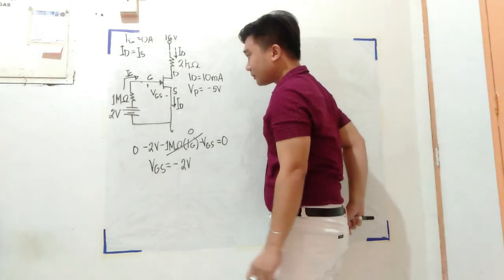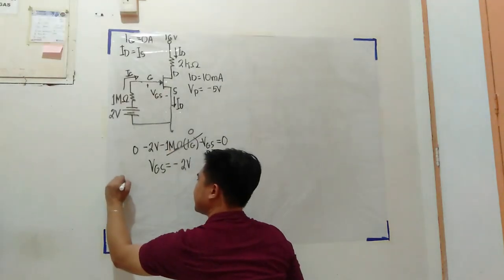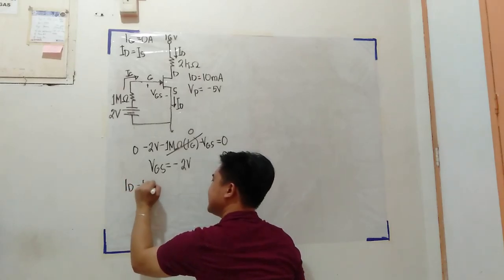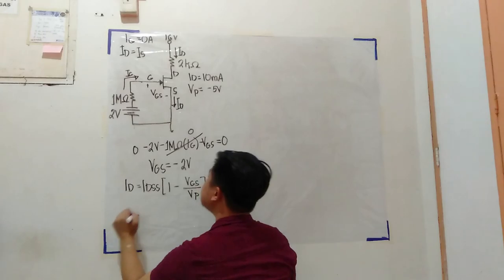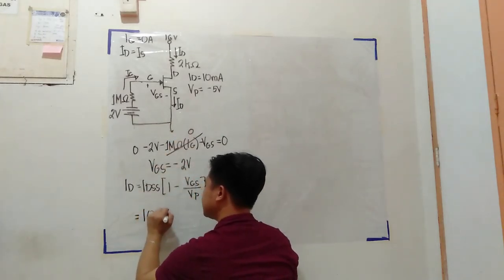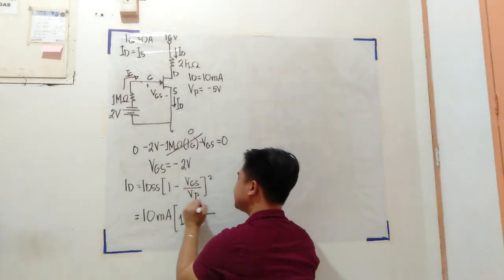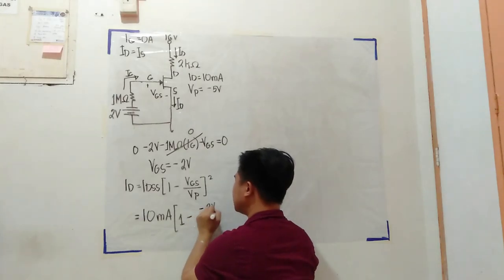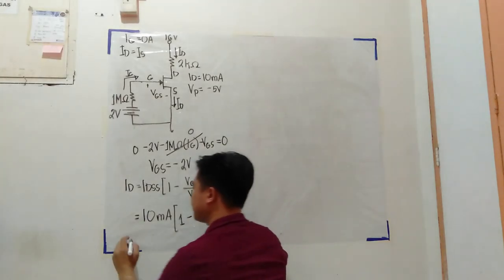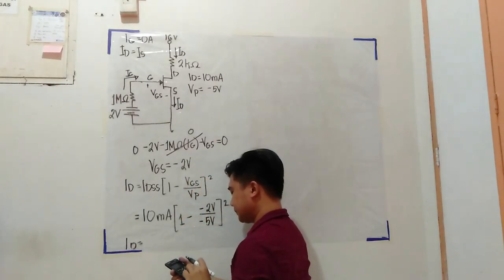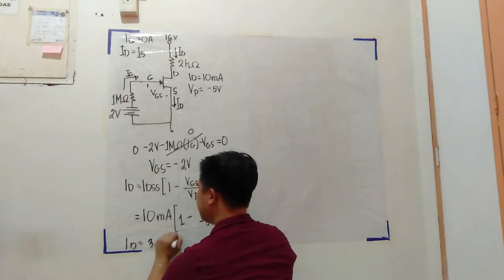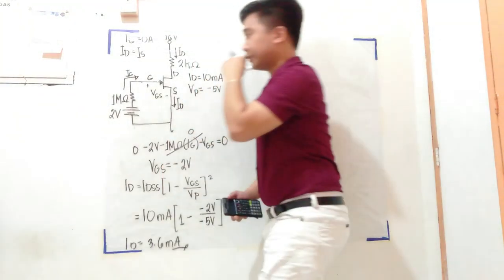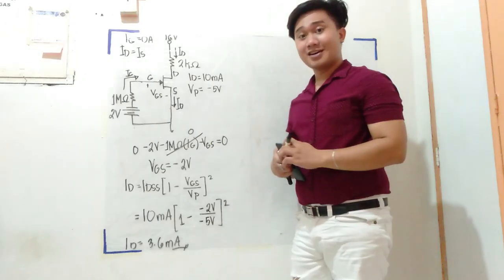VGS is negative 2 volts. Why is this zero? Because IG is just 0 milliamps - actually you don't even need to include this term since we know IG equals 0 amperes. And then let us use the Shockley equation: ID equals IDSS times 1 minus VGS over VP squared. Your IDSS is 10 milliamps, your VGS is negative 2 volts, and your VP is negative 5 volts. Do not forget it's squared. So I will find that my ID equals 3.6 milliamps.